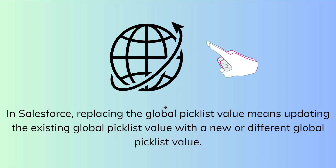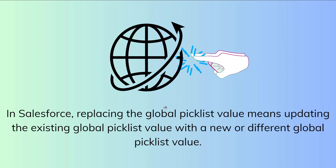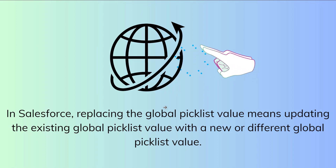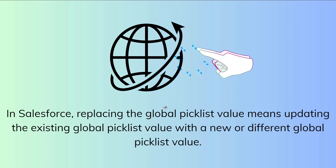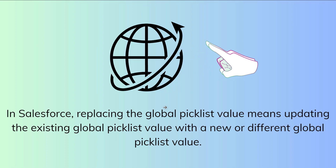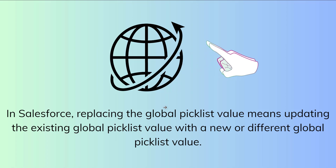In Salesforce, replacing the global picklist value means updating an existing global picklist value with a new or different value. For example, suppose you have a global picklist called Country with values like India, Australia, and Canada.